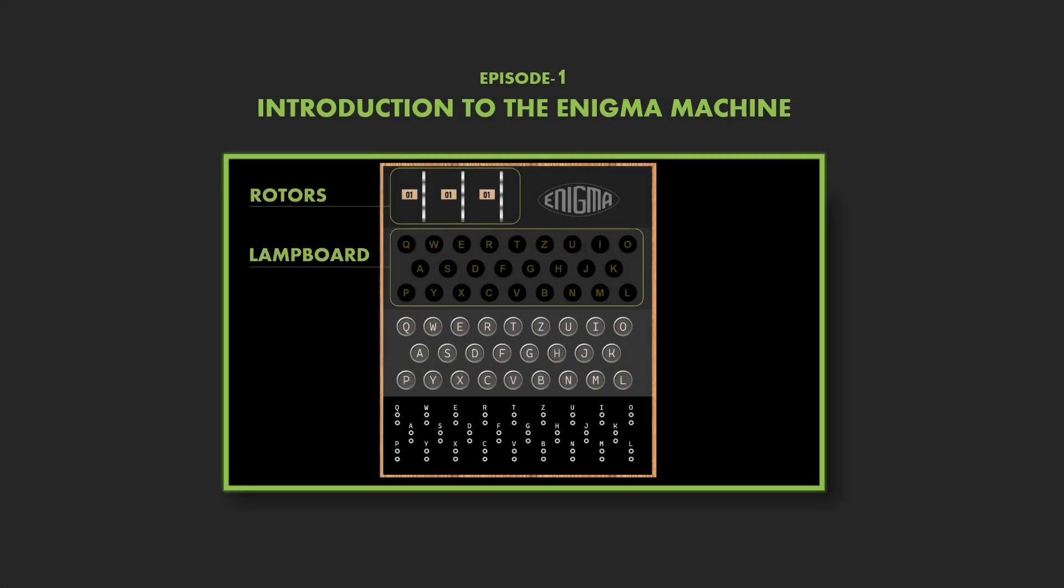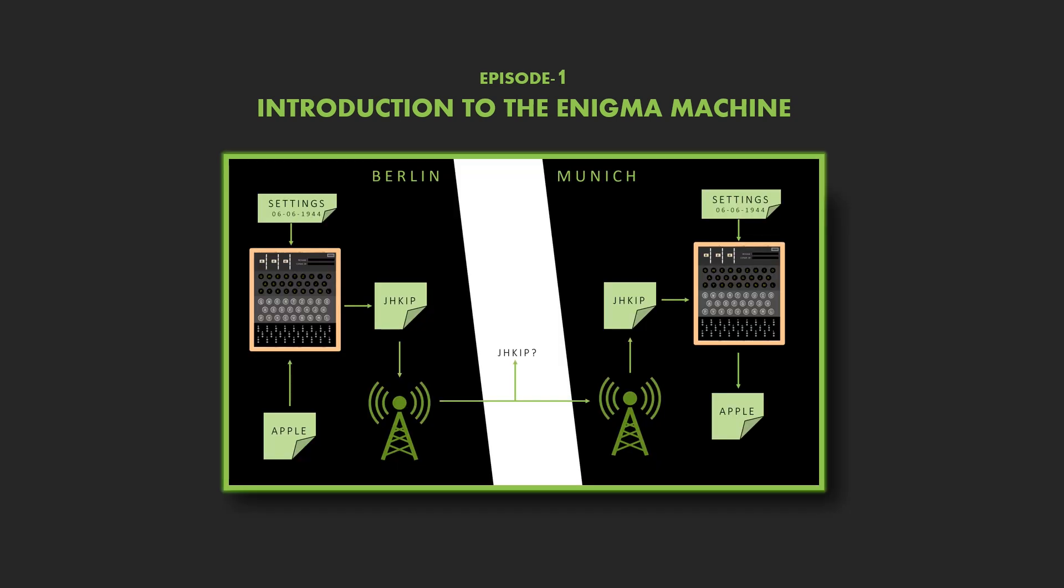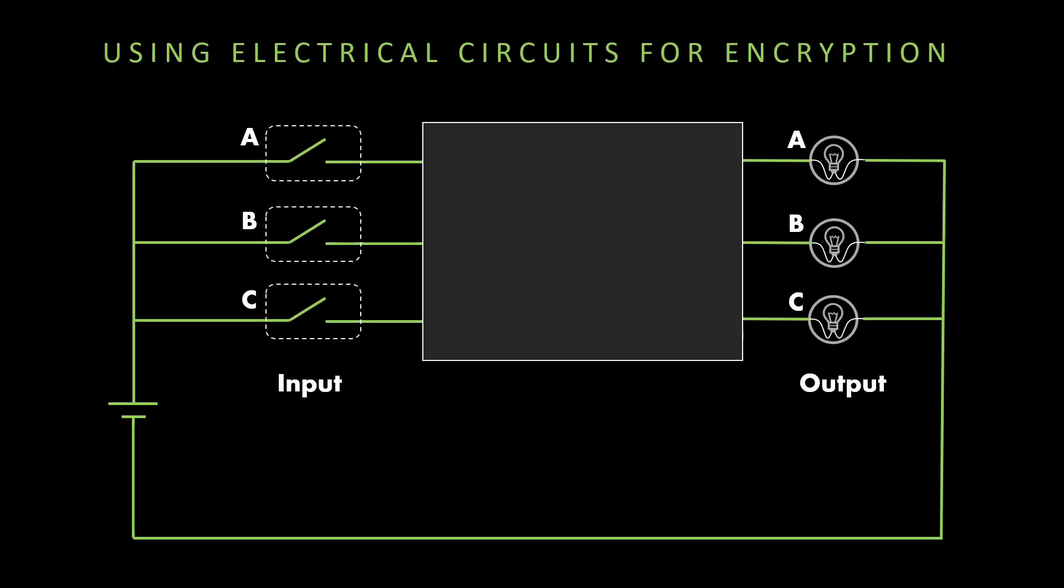In the last episode we saw how Enigma machine was used for encrypted communications. In this video we are going to dive into the details of how the Enigma machine works. Let us start with some basics - how do we use an electrical circuit for encryption?